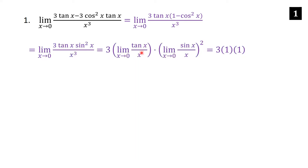If you forgot these limits, you can get them using L'Hôpital's rule. For tan x / x, the derivative of the top is sec²x and the bottom is 1, and sec²(0) = 1 since cos(0) = 1. Similarly, the derivative of sin x is cos x, and cos(0) = 1. So the final answer is 3.